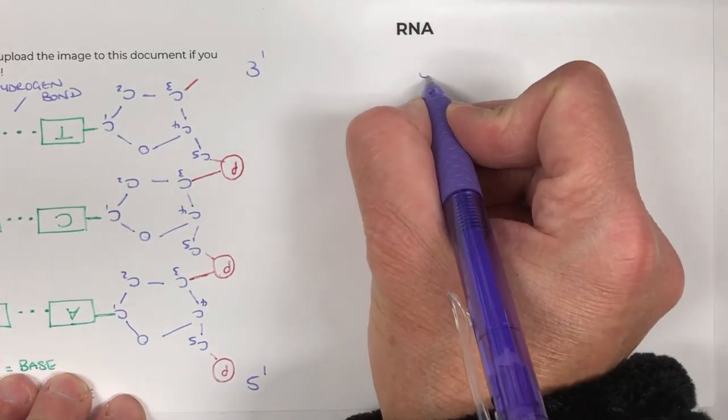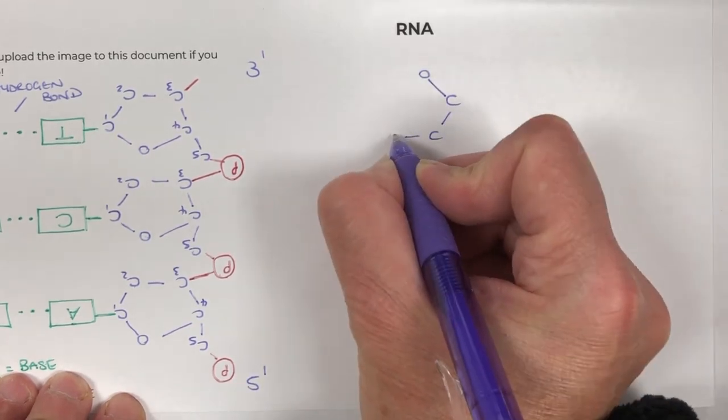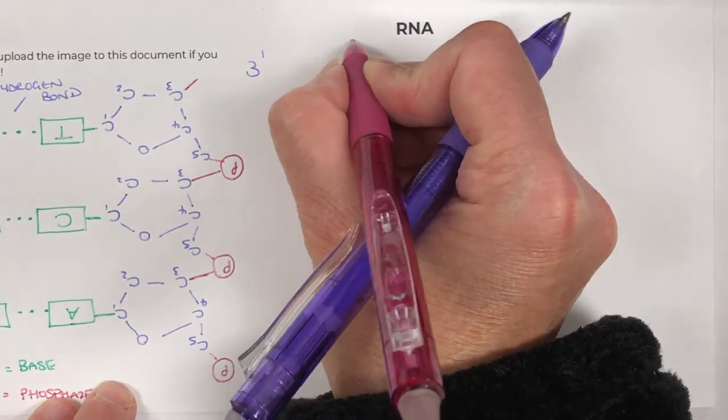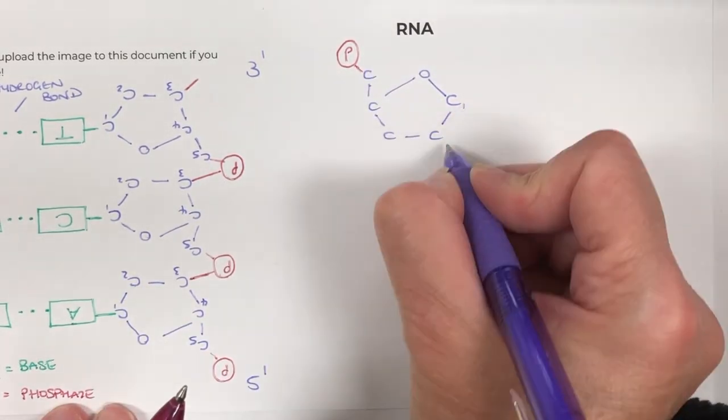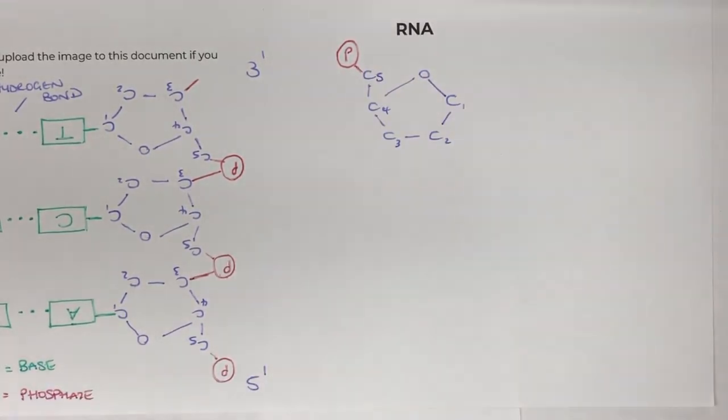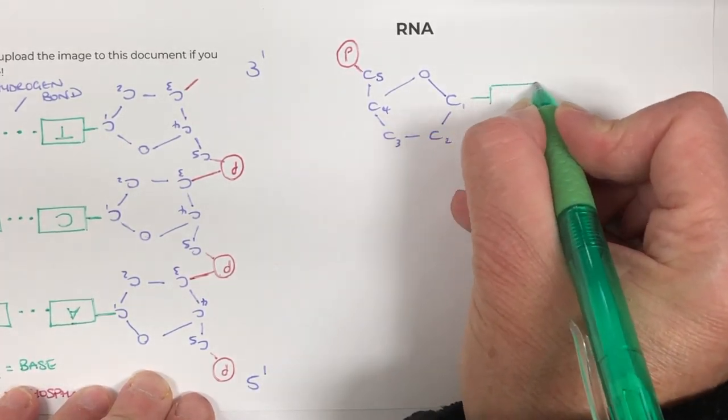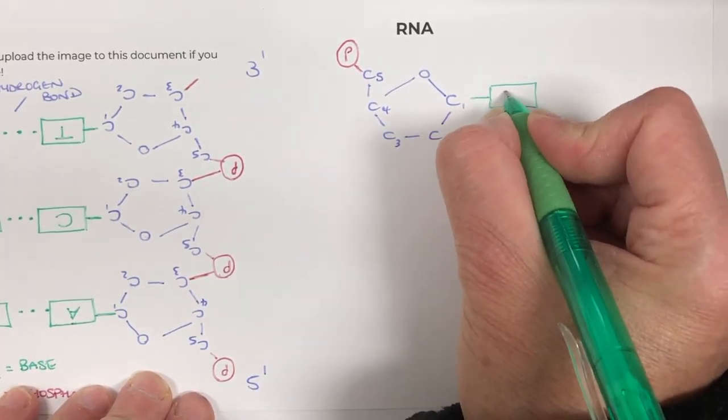So basically, we would draw our RNA, we would do our oxygen, we would do our first carbon, second carbon, third carbon, fourth carbon, up to the oxygen, up to the fifth. Okay, so far, they're the same. One, two, three, four, five. Now what I would do is I would immediately show that I know that the base here is going to be uracil.